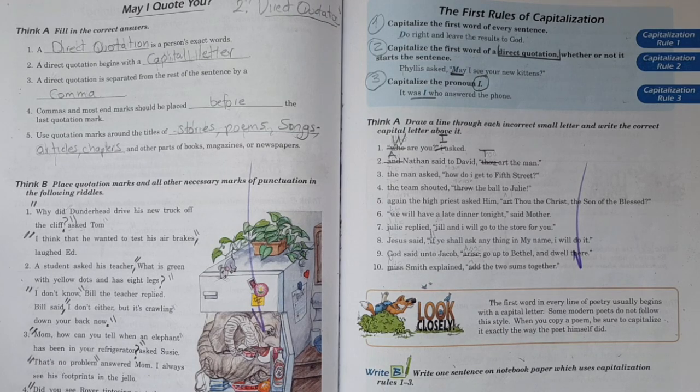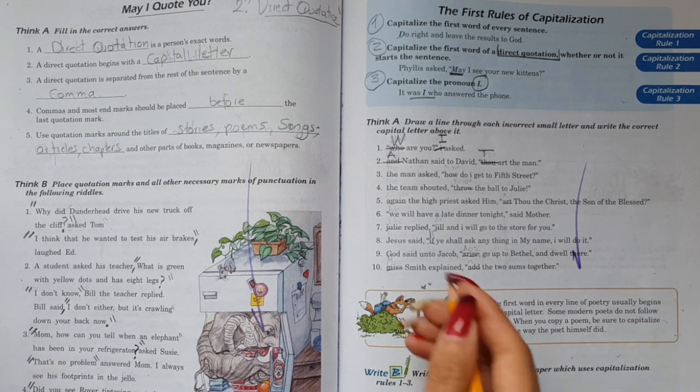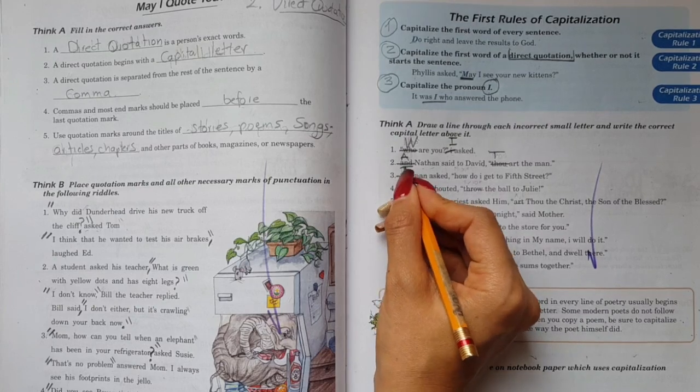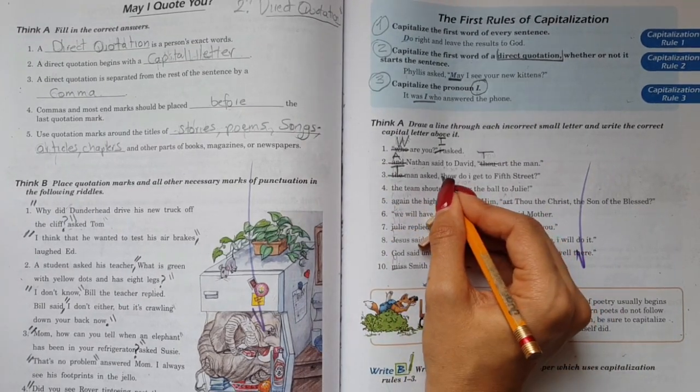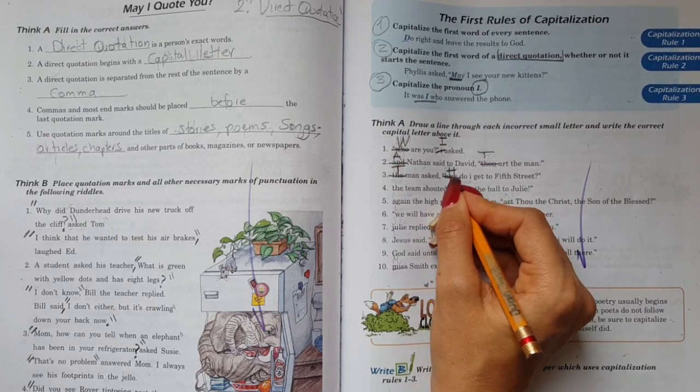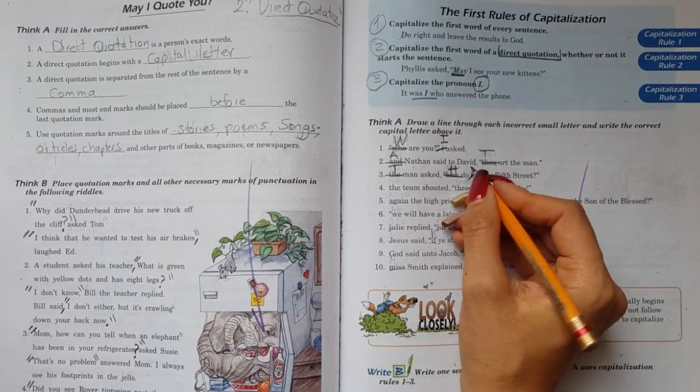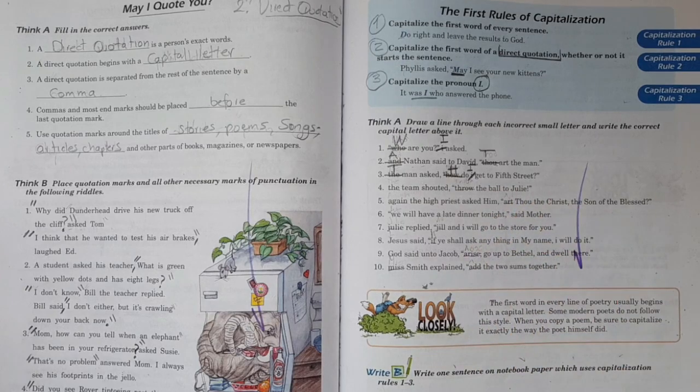Number three. The man asked, how do I get to Fifth Street. So the, this one is incorrect. I'm going to write the capital T. The man asked, how - this one I'm going to cross it out, I'm going to write a capital H. How do I - again, cross it out, capital I, get to Fifth Street.